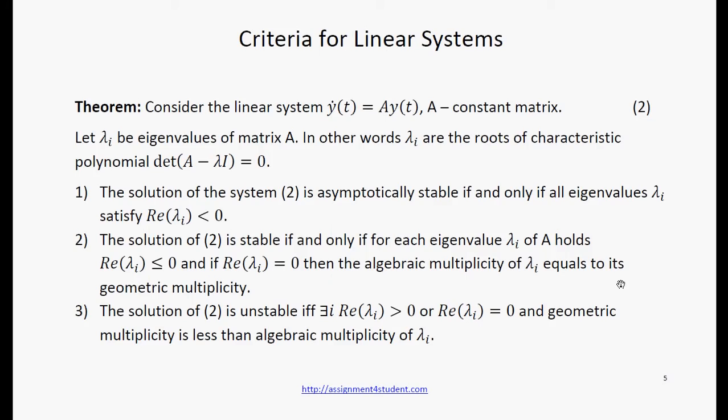Third, the solution of 2 is unstable if and only if the real part of some lambda is greater than 0, or it is equal to 0 and geometric multiplicity is less than algebraic multiplicity of lambda.